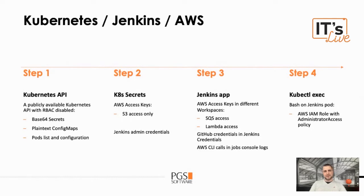So anyone can access the Kubernetes API to ask for secrets, config maps, or pod configuration. And even though it's public, they decide to turn off role-based access control. So anyone with just the IP address of this API can extract sensitive information from it. And in this story, I found interesting things in Kubernetes secrets.